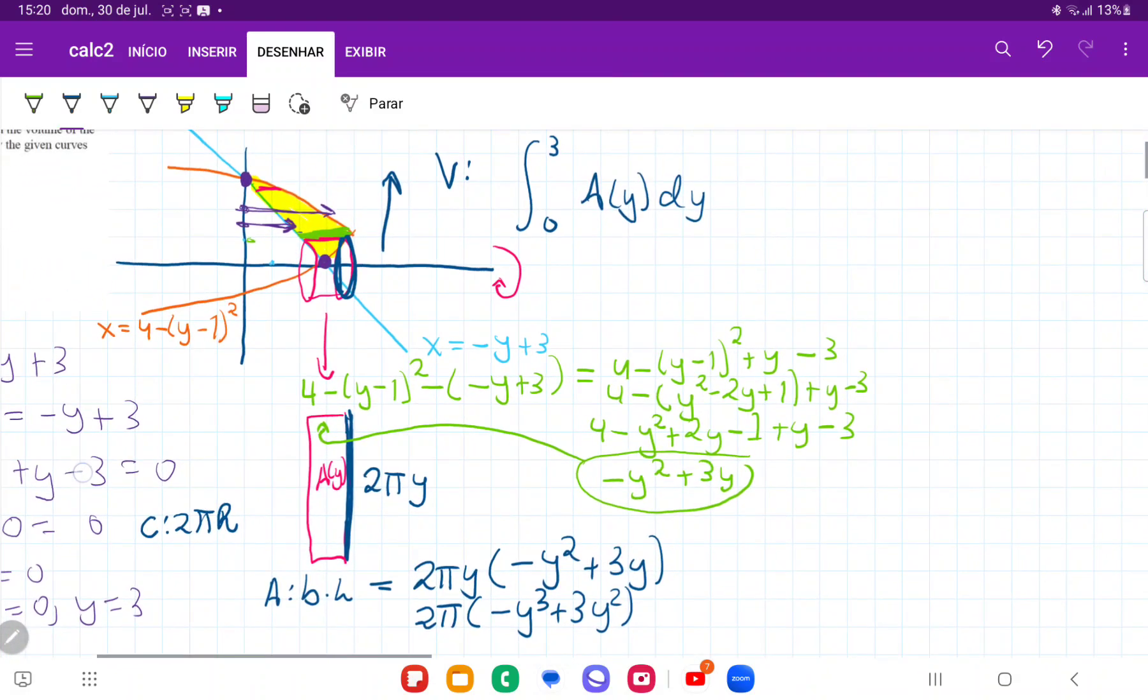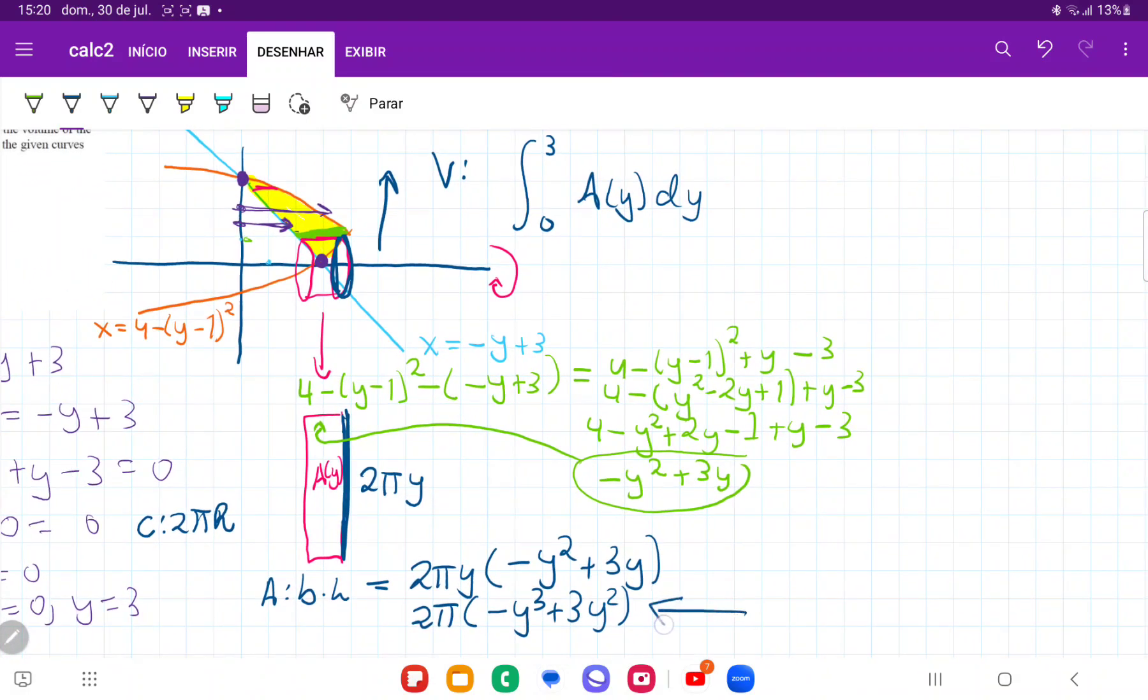All right, now that I have an expression for my area, this is the area of each of these rectangles, so each of these cylinders as I sum them up. So now my volume is basically going to be the integral from 0 to 3 of A(y) dy.